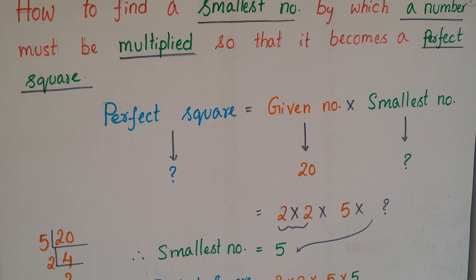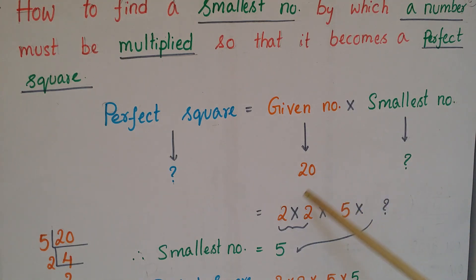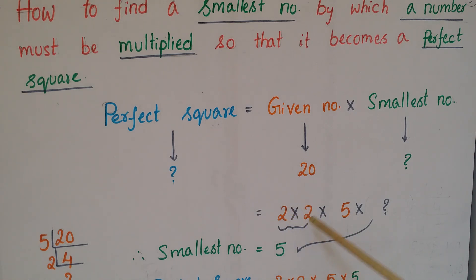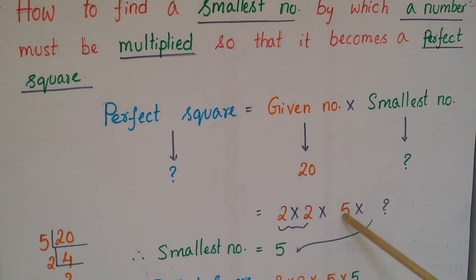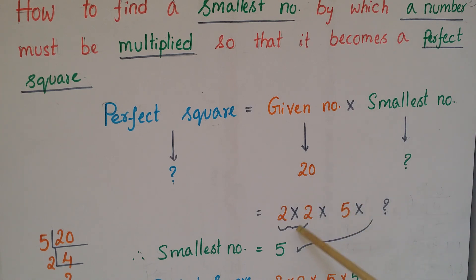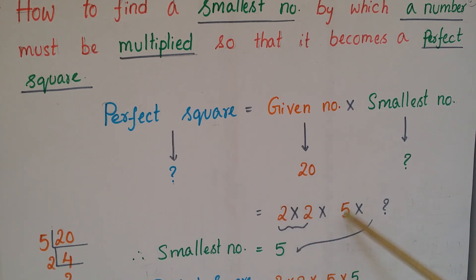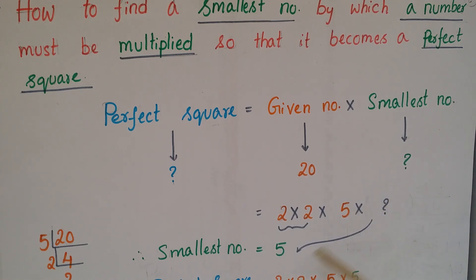Let us go through an example. Suppose the given number is 20. We can write 20 in terms of prime factors as 2 × 2 × 5. Here 2 × 2 forms one pair, but for 5 there is no pair, so the smallest number should be 5.